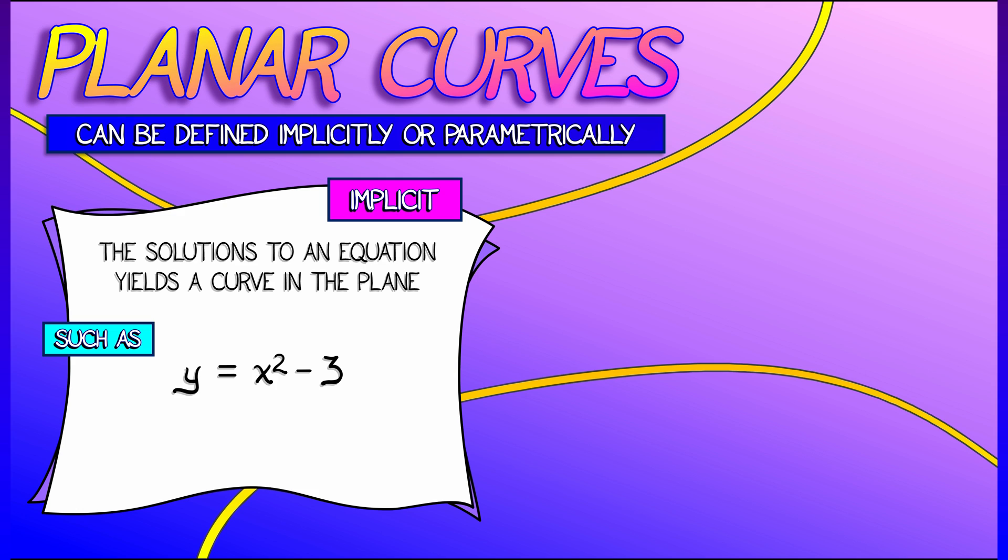You're used to thinking of that as a graph of a function. But really, you can have much more complicated expressions, the solutions to which give a curve in the plane. Something like x squared plus y squared equals 4.